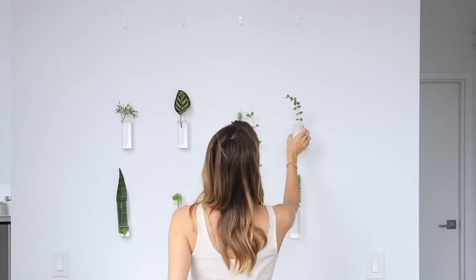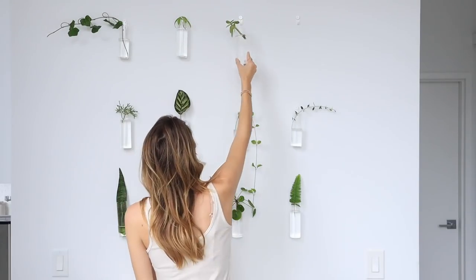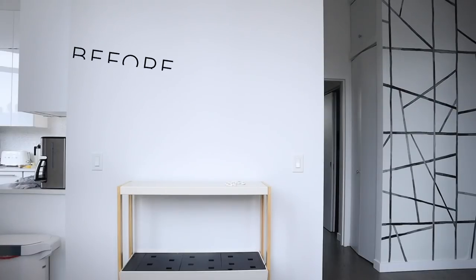My plan is to move them around and rearrange every so often if I want to try something new, but for now I really liked this arrangement and it was a very easy way to create a beautiful DIY plant propagation wall in my New York City apartment.